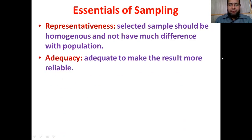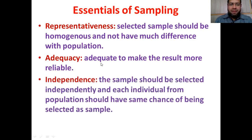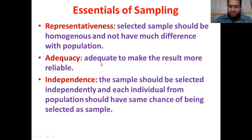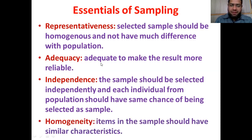Next, we have to select an adequate sample. For example, if we want to study millions of a population and our sample size is only a few hundred, we may not get accurate figures or accurate inference of the population. So the sample size has to be adequate. Then there should be independence — the sample should be selected independently and each individual from the population should have the same chance of being selected; there should be no bias in sampling. Finally, there should be homogeneity — items in the sample should have similar characteristics and should not differ widely.